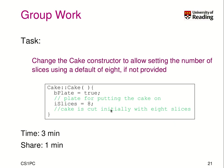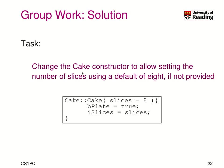Let's do a little task. We can change the constructor to include additional arguments. Change the cake constructor to allow setting the number of slices, but by default it should use eight if not provided. That means we use optional arguments from C++. The solution is to change the constructor parameter to int slices equals eight, and then set i_slices to slices inside the constructor body.